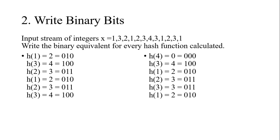The second step is to write the binary bit representation of each hash value. For H(1) = 2, the binary equivalent is 010. For H(3) = 4, binary is 100. For H(2) = 3, binary is 011. We write the binary equivalent for every calculated hash function value.